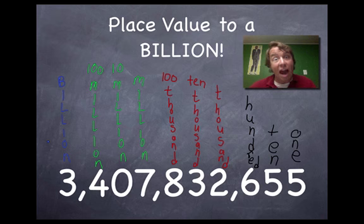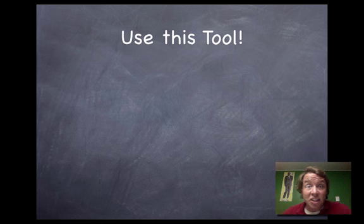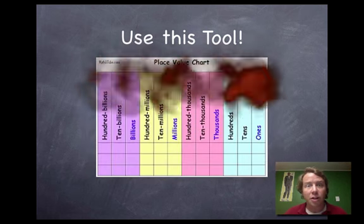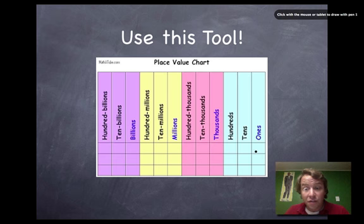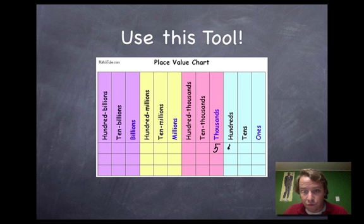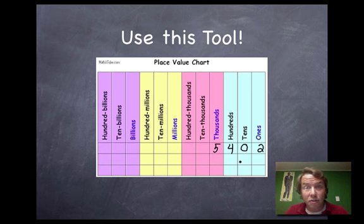If any of this was confusing, I'm going to show you a graphic you can fill out. This is a place value chart — it has all the place values we just covered and goes beyond the billions to the ten-billions and hundred-billions. For example, if you had five thousand four hundred and two, you'd put two in the ones place, zero in the tens place, four in the hundreds place, and five in the thousands place. Try plugging in numbers — ask someone for the biggest number they can think of and fill it in!